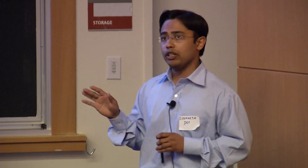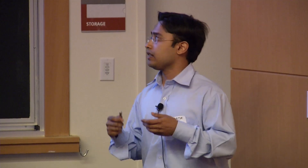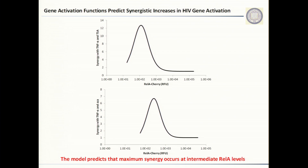Finally, some very preliminary data on how we've been using this model to better understand ways of reactivating latent clones. It has previously been shown that addition of multiple small molecules gives rise to synergistic reactivation of latent clones that can then be effectively cleared out. We found that intermediate levels of the transcription factor REL-A often give rise to a maximum of synergy, and we've been extending these studies to look at whether these very high values of synergy can be used to optimally reactivate latent HIV clones.